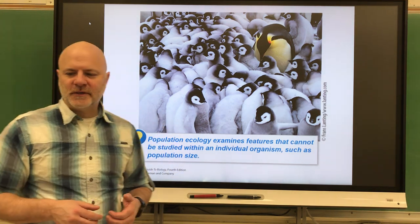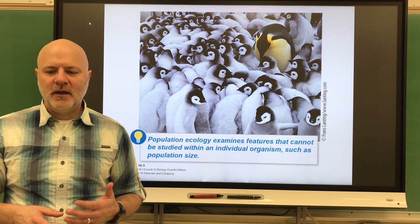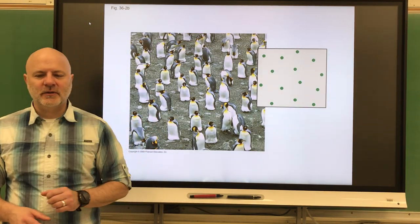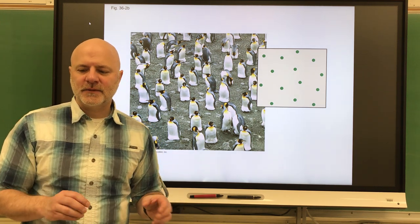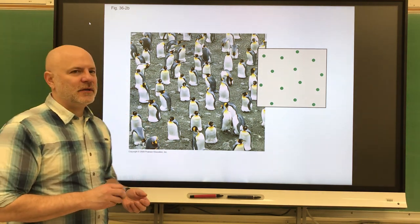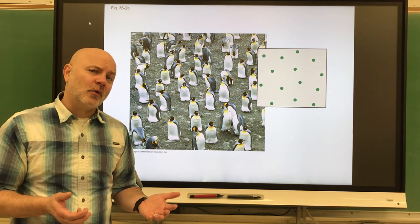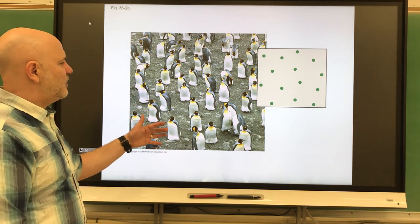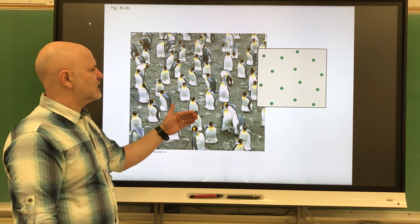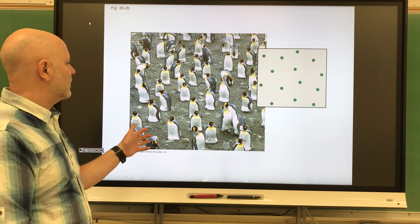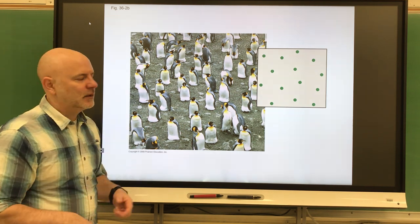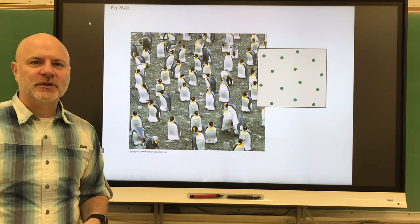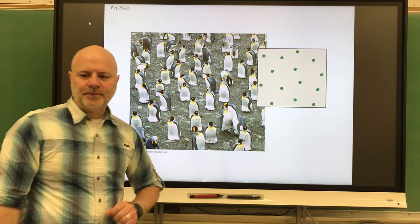Next is population dispersal — the pattern in which individuals are spread within an area. One type is uniform dispersal, where individuals are evenly distributed. This typically occurs with territorial organisms or where there is strong competition for resources. For example, these penguins on a nesting site are spread apart so each can have space to lay and raise their eggs — they stay roughly pecking distance apart from each other.